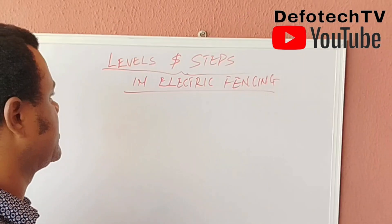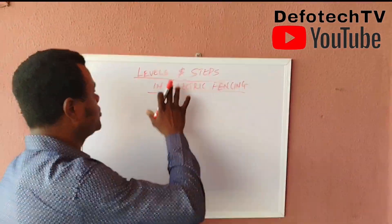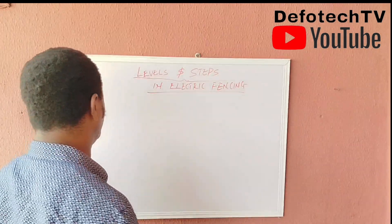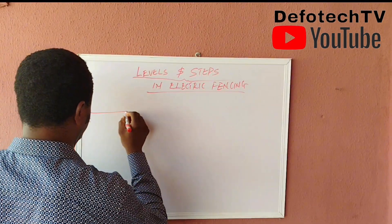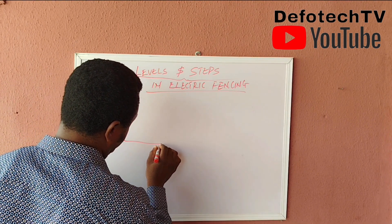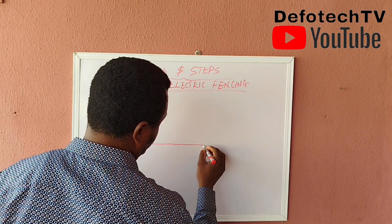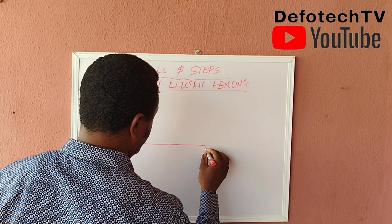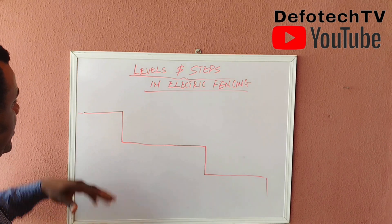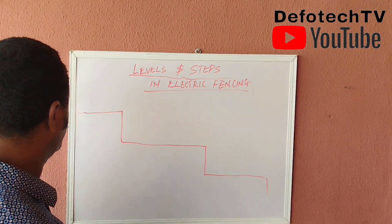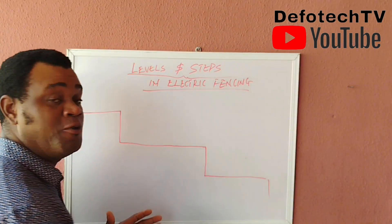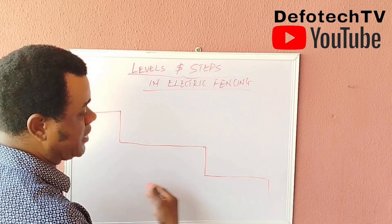I have noticed most installers always having issues when it comes to steps and levels. When we are talking about steps and levels in electric fencing, what are we talking about? Take for example you have something like this — this is a fence. I have this level here, but the topography is not plain. It's a sloped area. So most of the fence tends to have this kind of levels and steps. Most times, when installers are installing these, they have some challenges pegging their posts and even making their final connections on this kind of terrain.